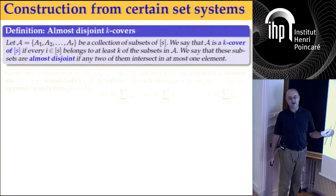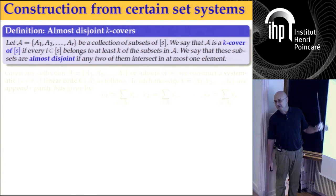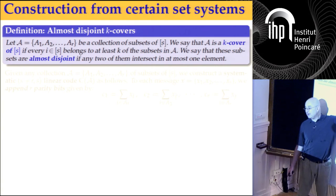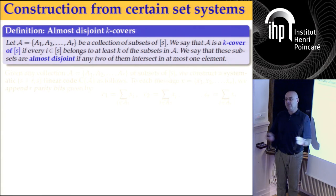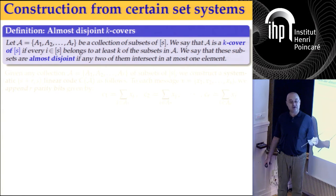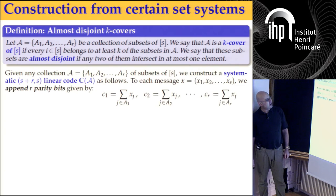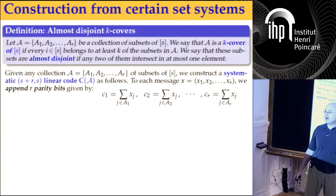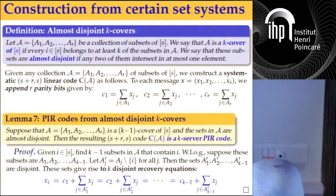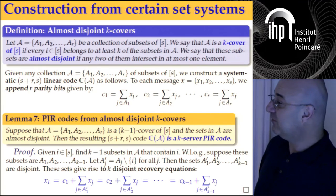We'll construct PIR codes from certain set systems with two properties mirroring those of PIR codes. We take a set of subsets of integers from 1 to S. We say it's a K-cover if every element belongs to at least K of them. And we want them to be almost disjoint: any two subsets either do not intersect at all, or if they intersect, they intersect in exactly one element. These are linear hypergraphs of vertex degree at least K.